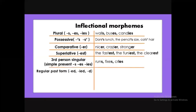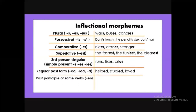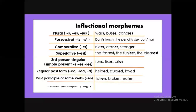Continuing the list of inflectional morphemes: the past participle of some irregular verbs, -en (e.g., 'taken,' 'broken,' 'eaten'); and the present participle -ing (e.g., 'thinking,' 'sleeping,' 'erasing').